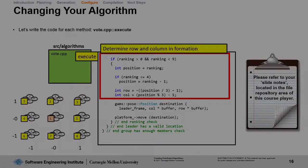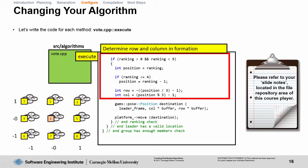Next, we're going to determine the row and column in the formation based on our rank that we retrieved earlier. As an example, if your ranking in the list is 2, then your position variable will be 1, and that will put you at row 1 and column 0 of the formation that you can see to the left. Last, we determine our future location, the leader frame, and we move to that location.